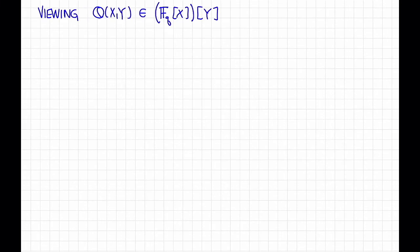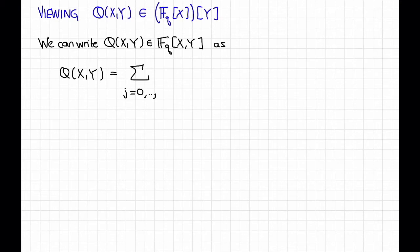For any bivariate polynomial Q(X,Y) over F_q, we can view this as a univariate polynomial in Y whose coefficients are themselves univariate polynomials in X. That is, we can write Q(X,Y) as the sum from j=0 to m_y of Q_j(X) times Y^j, where Q_j(X) is a univariate polynomial in X of degree at most m_x.